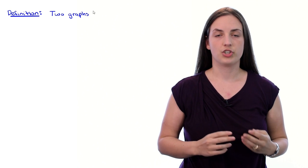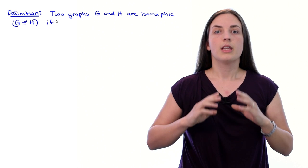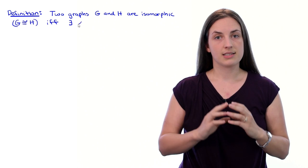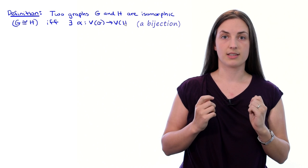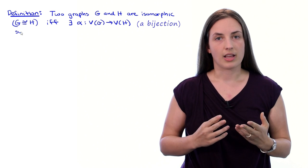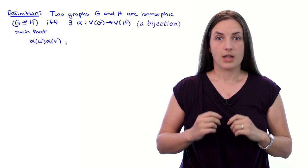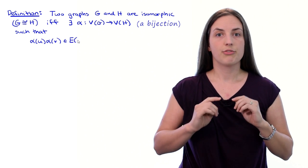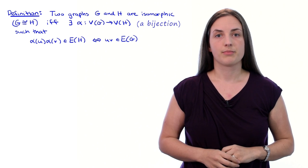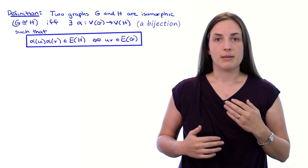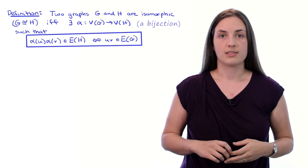Recall that two graphs, g and h, are isomorphic—and this is the notation—if and only if there exists a bijection α from the vertex set of g to the vertex set of h, such that α(u)α(v) is an edge of h if and only if uv is an edge of g. This condition is telling you that the bijection α preserves adjacency and non-adjacency.